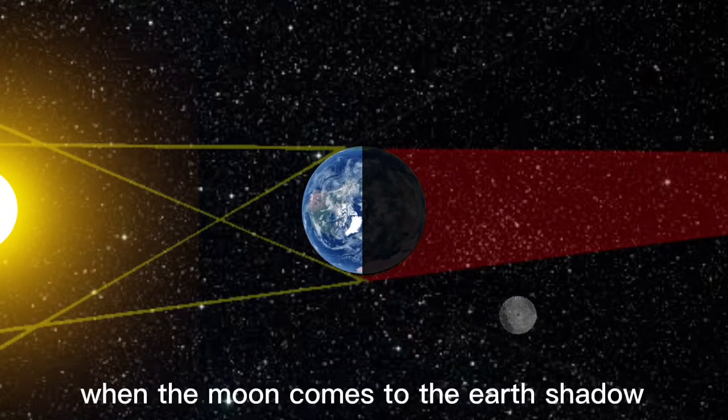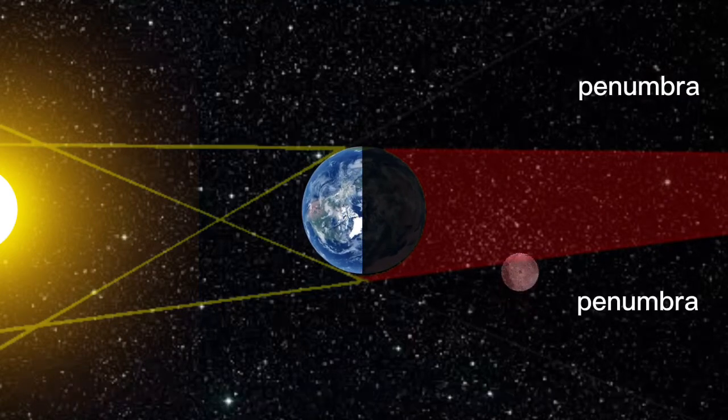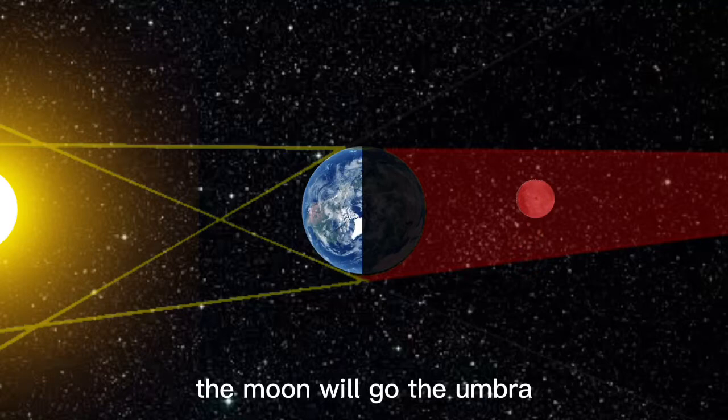When the moon comes to the earth's shadow, the moon enters the penumbra. When the moon goes to the penumbra, the moon will go to the umbra.